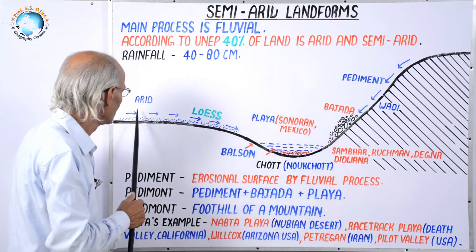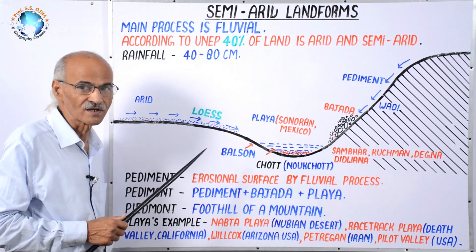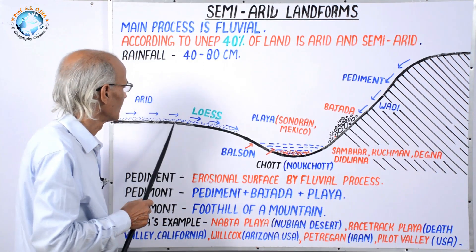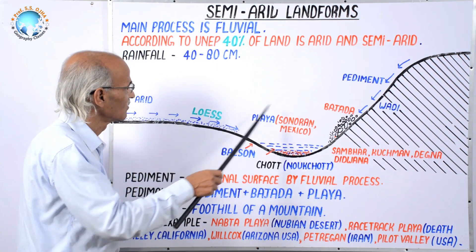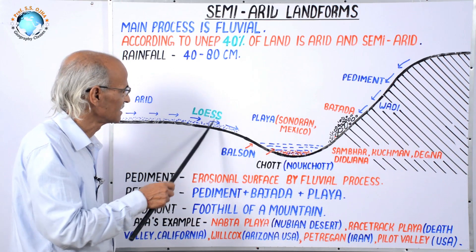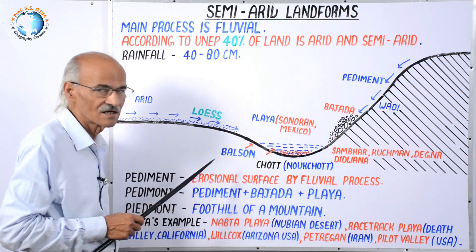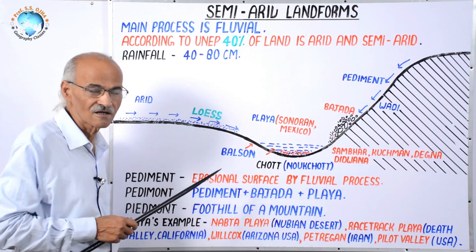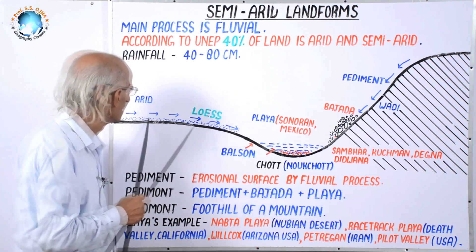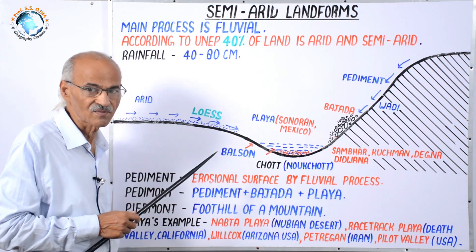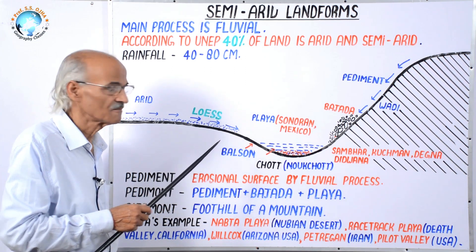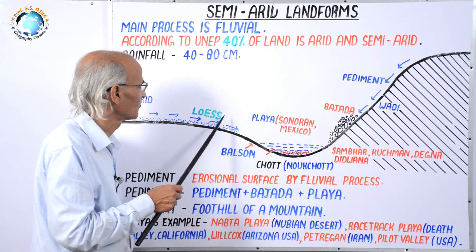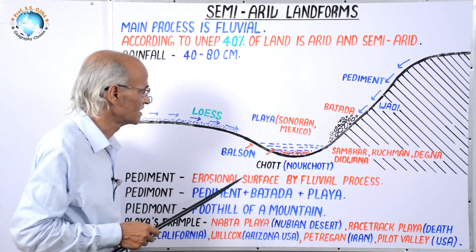Between semi-arid and arid there is a belt of loess. Loess is a soil or alluvial-aeolian deposit — one layer deposited by wind process, then the next layer by fluvial process — resulting in alternate deposition of sand and clay. This is the reason the loess region is very fertile, as it is both minerally rich and rich in humus brought by the fluvial process. So loess is a very important, fertile deposit found between arid and semi-arid zones.